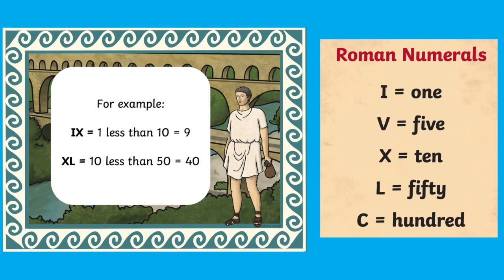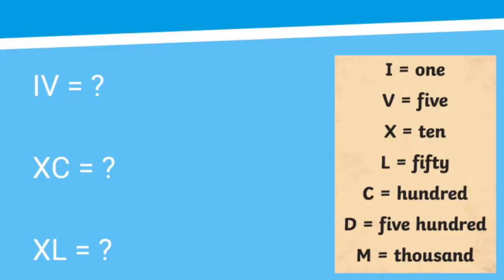Underneath it we've got XL. We know X is 10 and L is 50, and because the X is in front of the L we need to do 10 less than 50, which is 40. Have a go at changing these Roman numerals into regular numbers just like you did before.